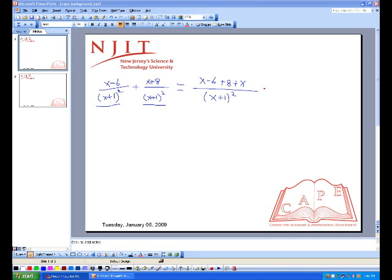In this case, this would equal x plus x gives me 2x, and negative 6 plus 8 gives me 2. Usually when you do a problem like this, you always want to try to factor it into the simplest term possible. So we see that 2x plus 2 can still be factored into 2 times (x plus 1), and then you have (x plus 1) squared.